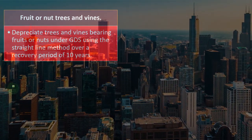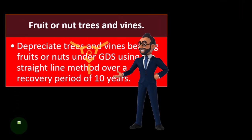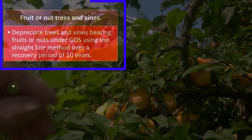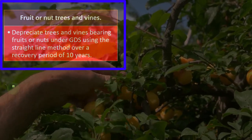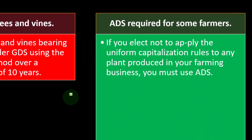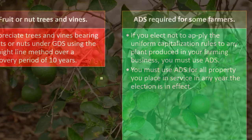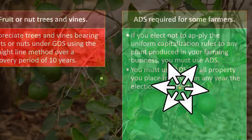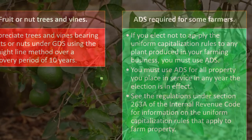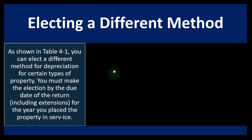There is another specialized situation: fruit or nut trees and vines. You depreciate trees and vines bearing fruits or nuts under GDS using the straight-line method over a recovery period of 10 years. Regarding ADS required for some farmers: if you elect not to apply the uniform capitalization rules to any plant produced in your farming business, you must use ADS for all property placed in service in any year the election is in effect. See the regulations under IRC Section 263A for information on uniform capitalization rules applicable to farm property.